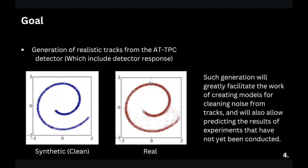Our goal is to generate unique, realistic tracks from the TPC detector as the final goal of our project. This is a generation of experiments that have not yet been carried out. We want the model to take as input the name of the particle that flies into the chamber with gas, as well as the name of the gases with which the chamber is filled, and the output of the model should be the generated tracks that arise with this configuration.